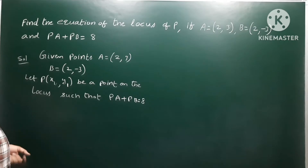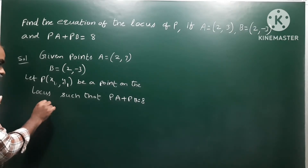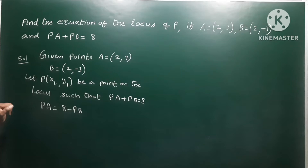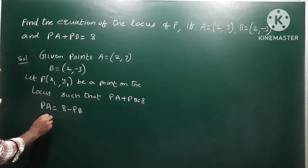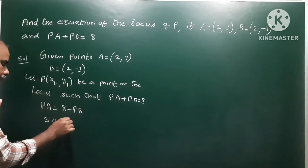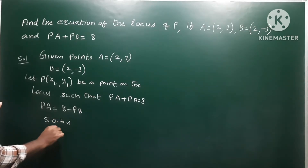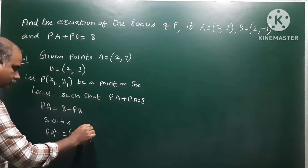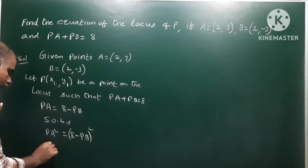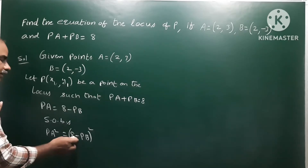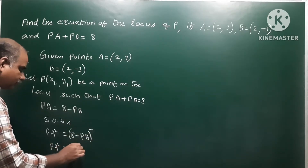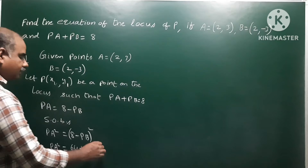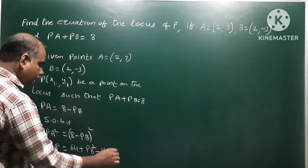Such that PA plus PB equals 8, so PA equals 8 minus PB. Now squaring on both sides: PA squared equals (8 minus PB) whole square. Expanding using the (a minus b)² formula: PA² equals 64 plus PB² minus 16 PB.